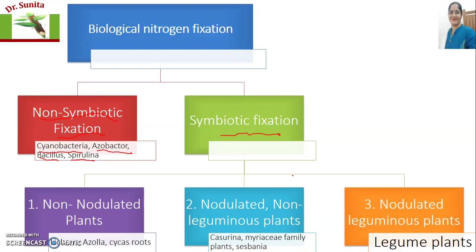Symbiotic fixation is further of three types based on whether root nodules are formed and whether the plant is leguminous. The first type is non-nodulated plants, where nitrogen fixation takes place with the help of lichens, azolla, cycus roots, etc. The second category is nodulated non-leguminous plants — nodule formation occurs in roots or stem, but these are not leguminous plants; examples include casuarina and plants of the myrisine family or sesbania. The third type is nodulated leguminous plants, such as pulses, where nodules are also formed.